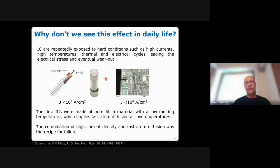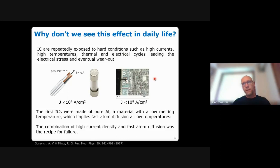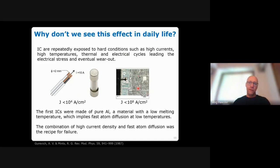Why don't we see electromigration in daily life? In household cables, the current density is on the order of 10⁴ A/cm², and going above that burns the cable — it melts the material, as happens in a fuse. But in small circuitry, wires are much smaller so heat is removed efficiently, allowing much higher current densities. That's when electromigration occurs — it only happens when you can efficiently remove the heat.